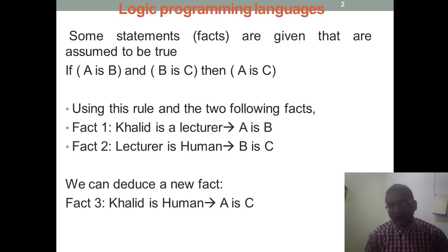So first we will see what the fact is. The fact is a statement which is assumed to be true. So let's take an example. If A is B is given to us and also if it is given that B is C, then we can induce that A is C.